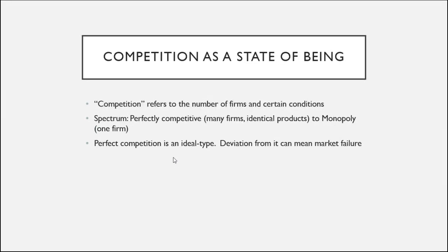In perfectly competitive markets, firms all sell identical products, people can buy and sell whatever quantity they want at a given price, and neither the buyer nor the seller can affect the price. On the other end, you have monopolies, where there is only one firm and that firm gets to set the market price. When we talk about competition as a state of being, perfectly competitive markets are held up as an ideal type, and deviation from a perfectly competitive situation can indicate market failure.